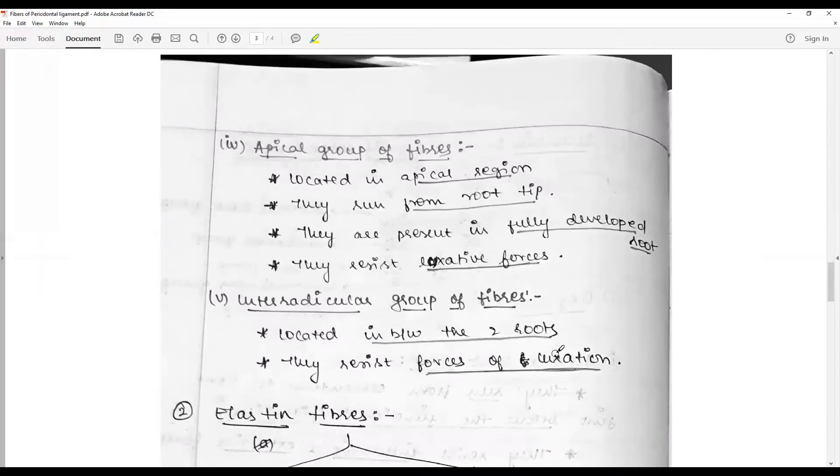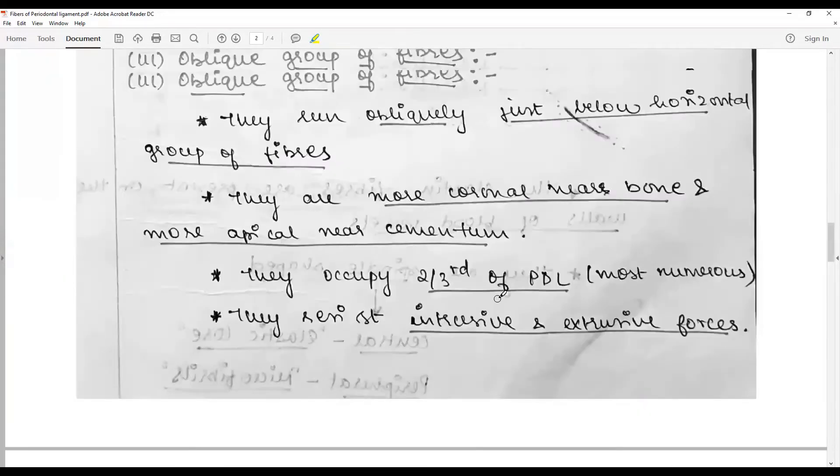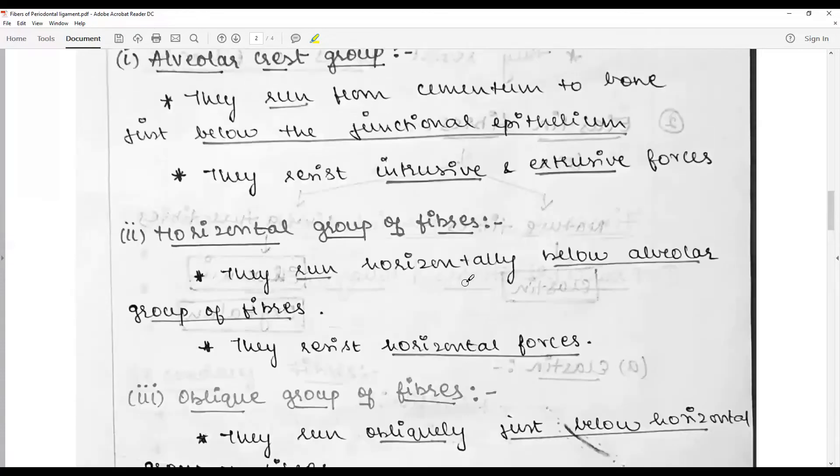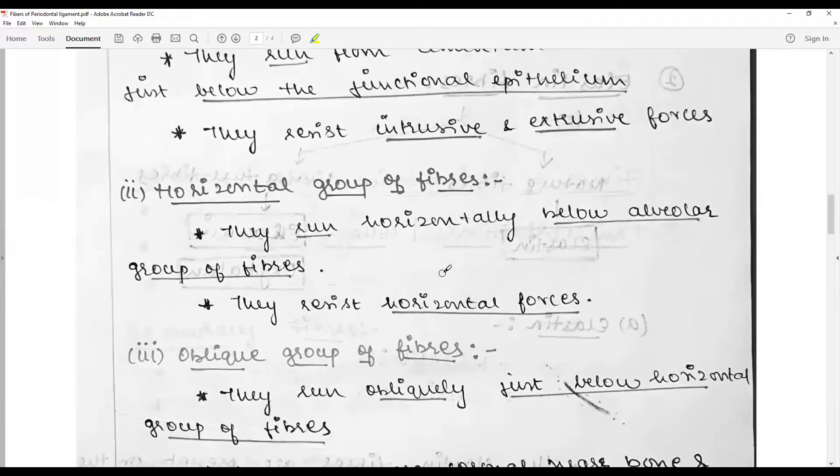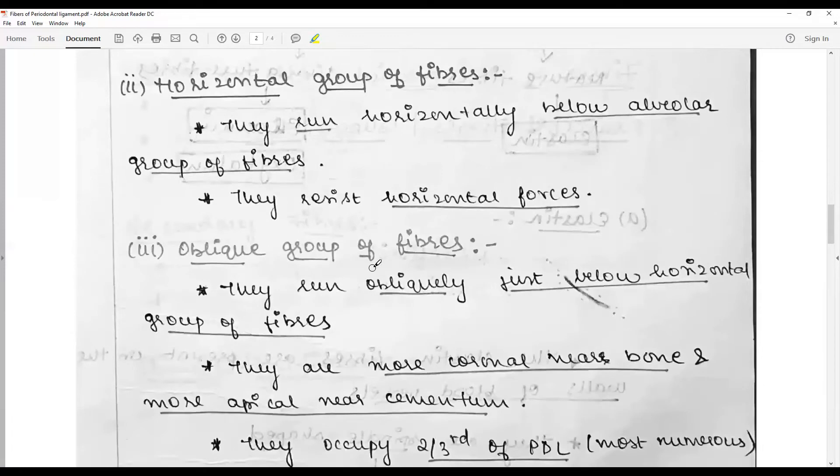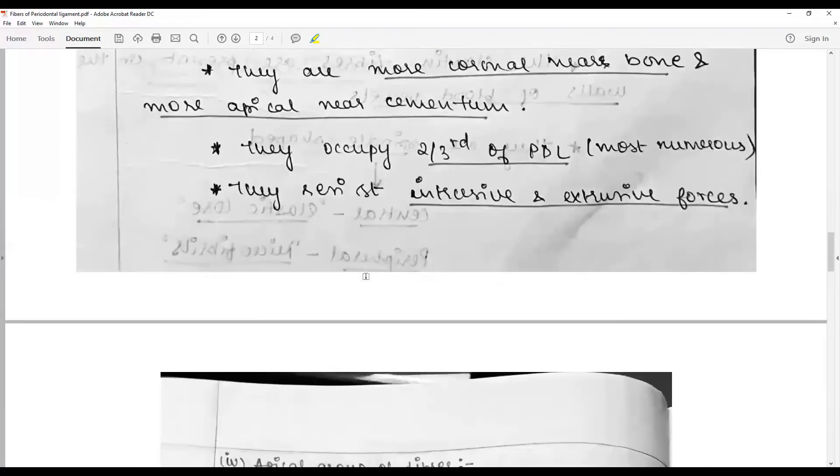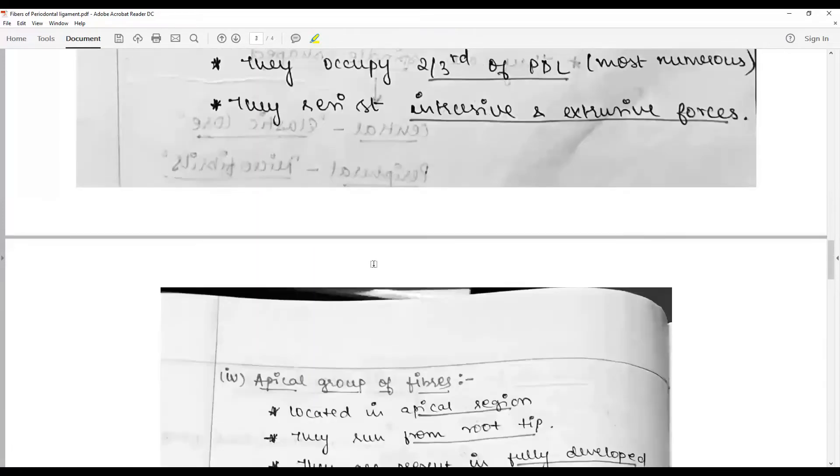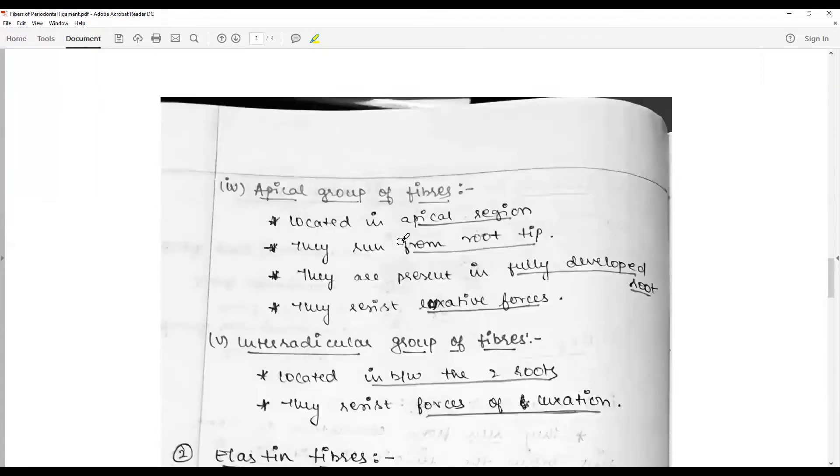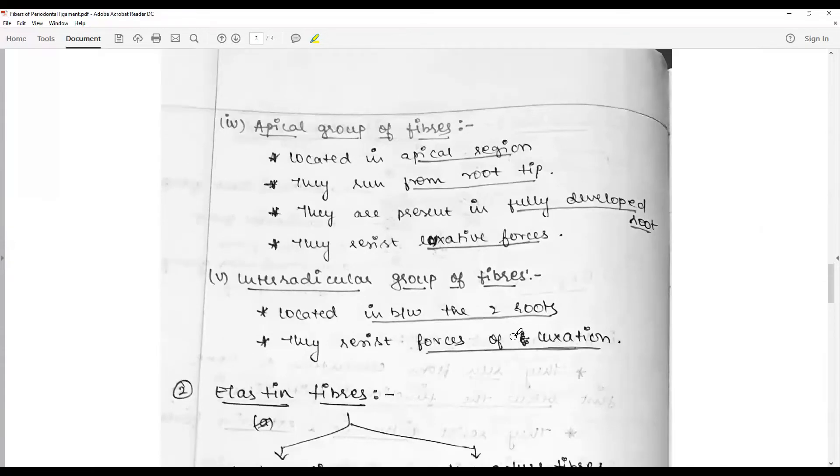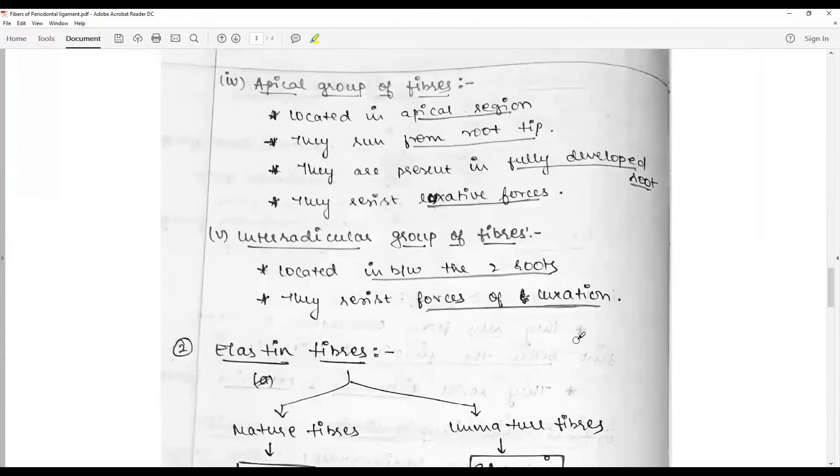The clinical significance is that alveolar crest groups play an important role in orthodontics. Horizontal, oblique, and apical groups play a very important role in perio and periapical treatments in endodontic subjects. Interradicular group fibers resist the force of luxation and are associated directly with oral surgery for exodontia.